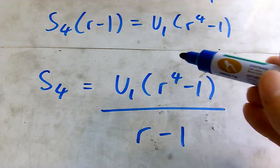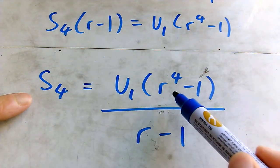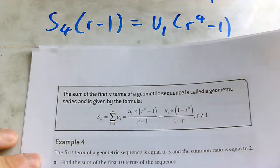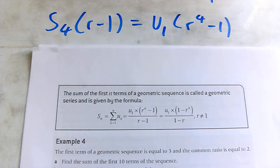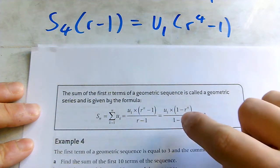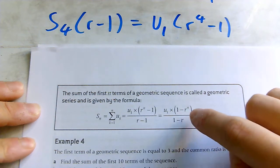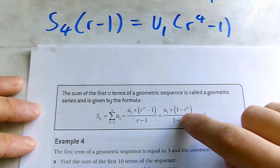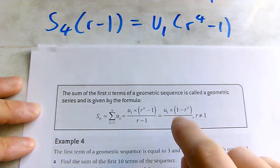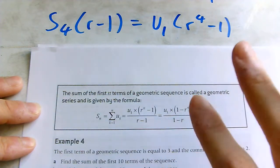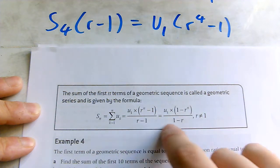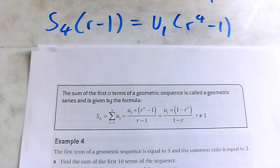This formula is specifically for the first four terms, but if you look at the uploaded notes you'll see it can be generalized so the four becomes n. There are two versions: one is the first term multiplied by (rⁿ − 1) / (r − 1), and the other has the r and the one reversed. Both give the same answer. The second version is used when r is less than one so you don't get nasty negative terms on the calculator — just make sure that if you flip the numerator you do the same on the denominator.